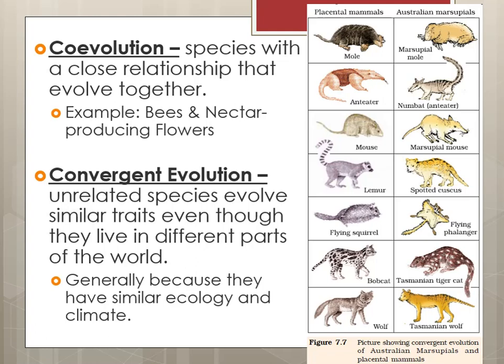Then there is convergent evolution, where unrelated species evolve similar traits even though they live in different parts of the world. This is generally due to a similar ecology, environment, or climate. A really good example is the Australian marsupial species — they have a placental mammal cousin, so to speak. Marsupials give birth to very small embryos that crawl into a pouch and continue to develop, while placental mammals give birth to live young. Examples include the marsupial mole and the regular mole, anteaters, mice, lemurs, flying squirrels, some type of cat, and some type of wolf — marsupial versus mammal counterparts.